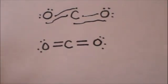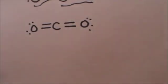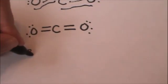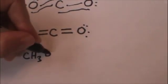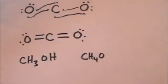So now let's draw the Lewis dot structure for methanol, CH3OH. Or you might have even seen it written CH4O.